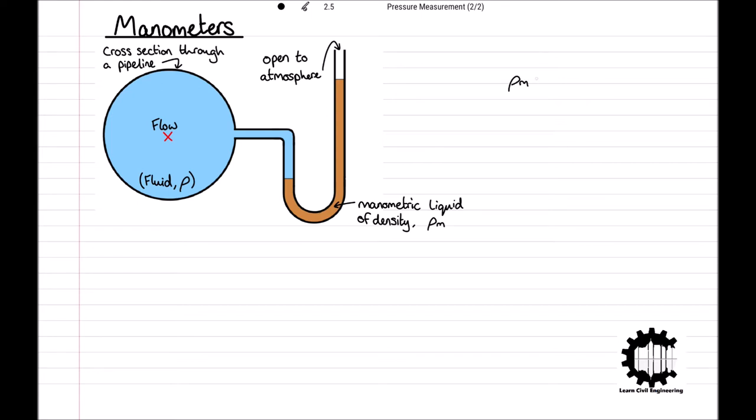The density of the manometric liquid rho m must always be greater than the density of the liquid flowing in the pipeline. In the case where the pipeline contains a flowing gas, the presence of the manometric liquid prevents the gas escaping through the open end of the tube.